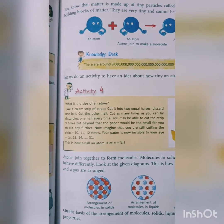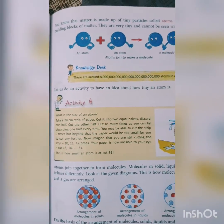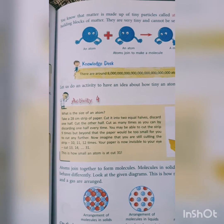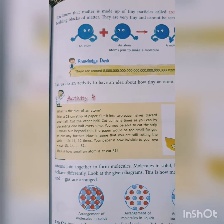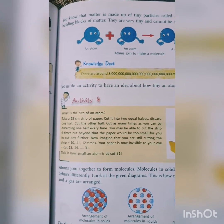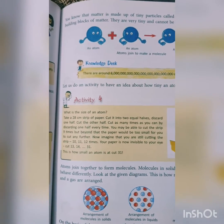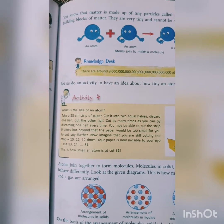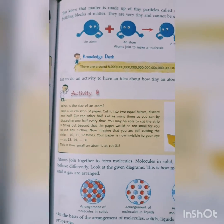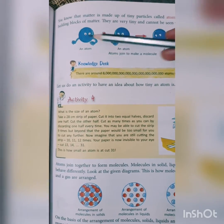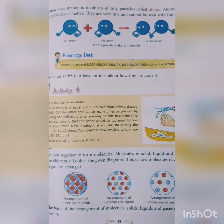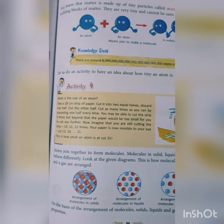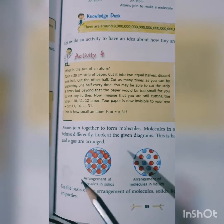Do you know that matter is made up of tiny particles called atoms? An atom is a building block of matter. Sometimes we can see these tiny particles with the naked eye, but sometimes we cannot. As you can see in the figure, when two atoms join together they form a molecule, and many molecules joined together form matter.